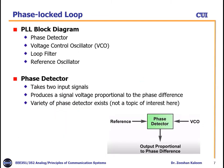Here is a detailed diagram showing the phase detector, voltage control oscillator, loop filter, and reference oscillator. The phase detector takes the reference signal input and the VCO signal input, and gives an output proportional to the phase difference. If there is a phase difference between the reference and the VCO frequency, it gives output according to that difference. It takes two input signals and produces a signal voltage proportional to the phase difference. A variety of phase detector circuits exist, but that is not the topic of interest here.